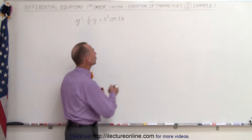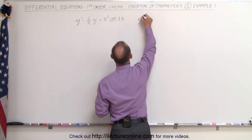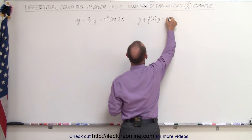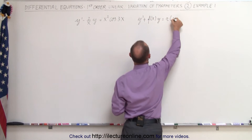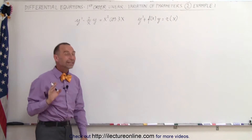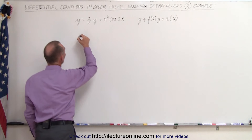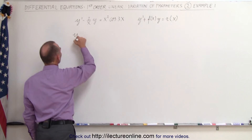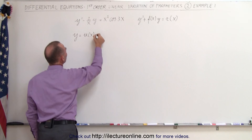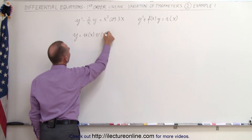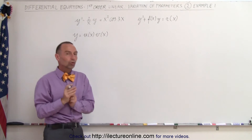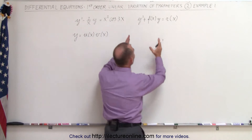This is an equation in the form y' plus some function of x times y is equal to some other function of x. Since it's in that form, we know that the solution y will be equal to the product of some function u times some other function v, where v is the solution to the homogeneous part of the equation.